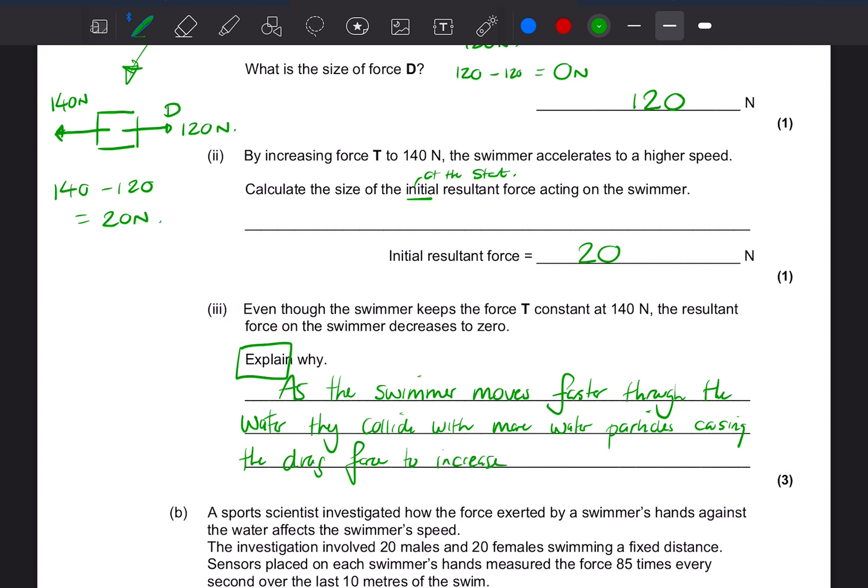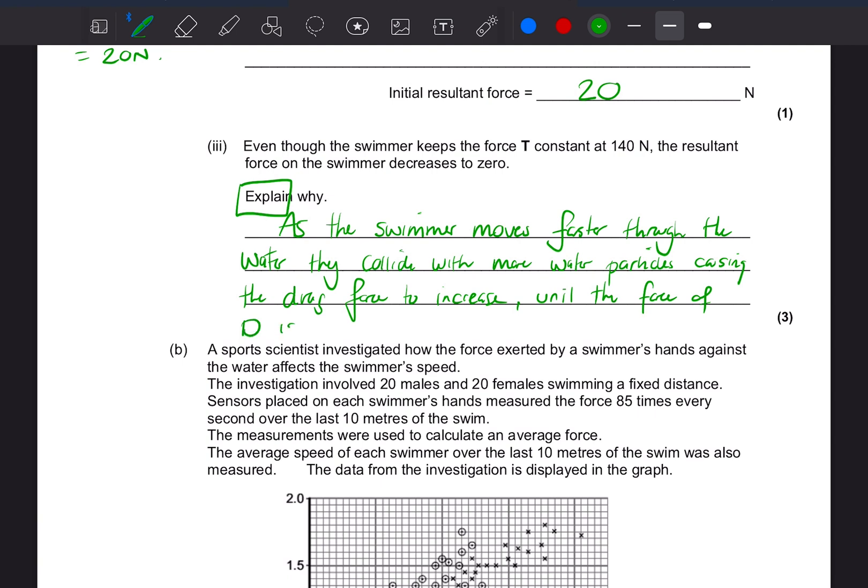Let's see, we've got three marks and we needed to explain why the resultant force goes to zero. So as the swimmer moves faster, so probably one mark there for saying they're now moving faster. They collide with more water particles, causing the drag force to increase. Good, too much. But we haven't said why it gets to zero. Increase until the force of D is equal to the force of T. All right, because if it's zero, the force D and T must be equal. All right, that now explains the force of T, why we have an overall resultant of zero.